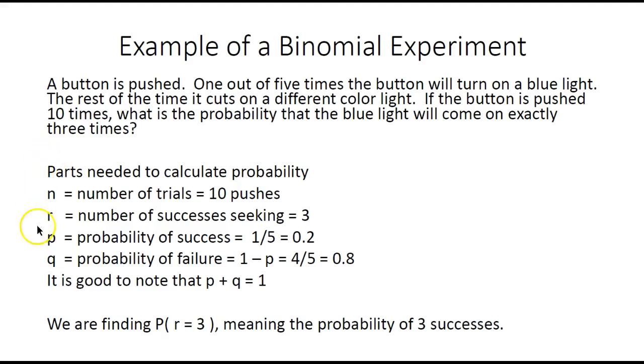Here is some of the variable notation that will be used. N is the number of times we push the button, in this case 10. R is the number of successes. Here we want the light to come on three times.